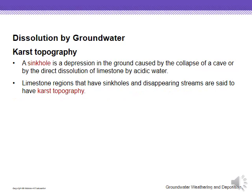A sinkhole is a depression or a collapse in the ground. In our area and farther south, sinkholes often occur when we pump too much water out — that removes the support and the ground collapses in on itself. However, sometimes if water is moving through and dissolving the limestone, it leaves a cavity behind. That limestone region where we see a lot of sinkholes and streams disappear is called karst topography.